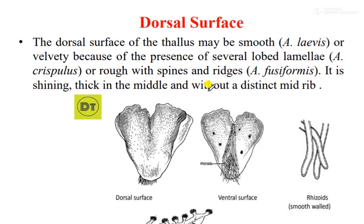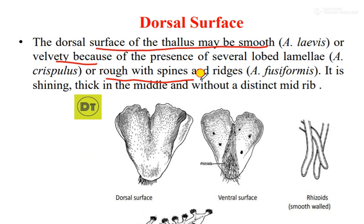Now I am going to talk to you about dorsiventral. Dorsiventral means having a dorsal surface and a ventral surface. The dorsal surface is the upper surface. The dorsal surface of the thallus may be smooth, or velvety, or rough depending on the species.